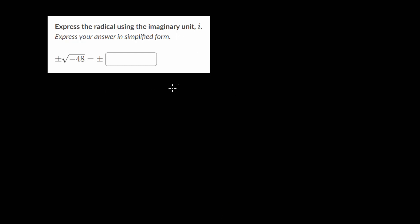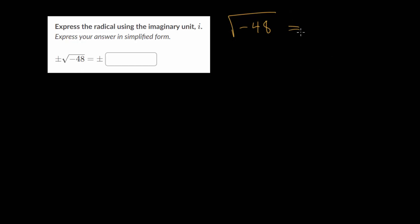Let's look at some different example problems of simplifying square roots of negative numbers. In this example, we have the square root of minus 48. The general strategy for approaching these problems is to first separate it into the square root of minus 1 multiplied by 48.